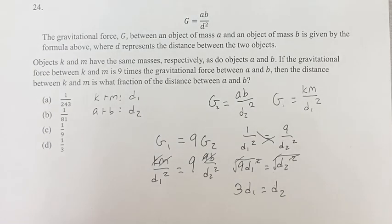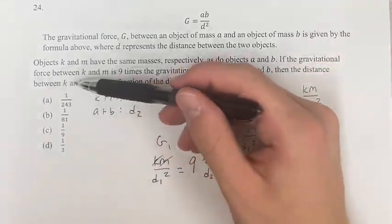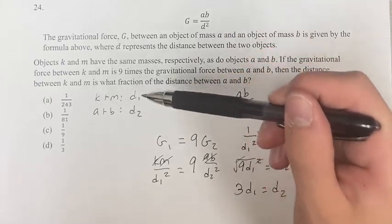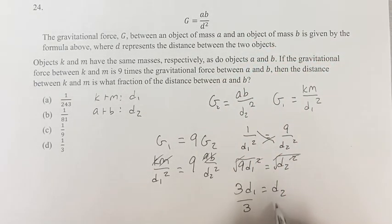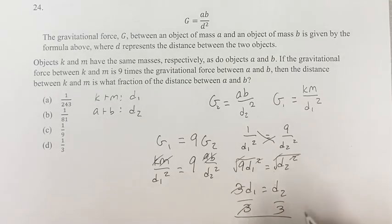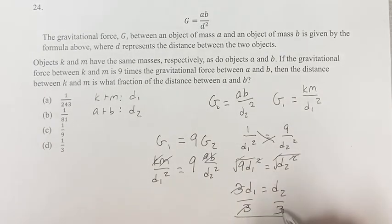So we are asked, the distance between K and M, D1, is what fraction of the distance between A and B? So if we divide both sides by three, we get that it is equal to the distance between A and B divided by three.